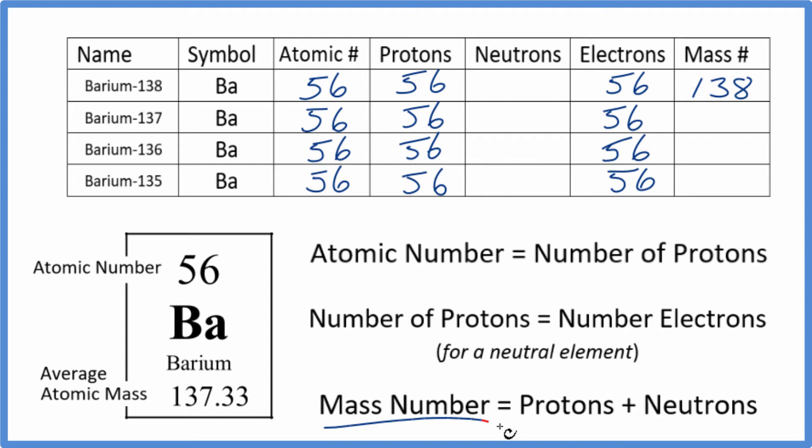the mass number equals the protons plus the neutrons. So 56 plus something gives us 138. So we could just subtract 56 from 138 and we'd have 82 neutrons.